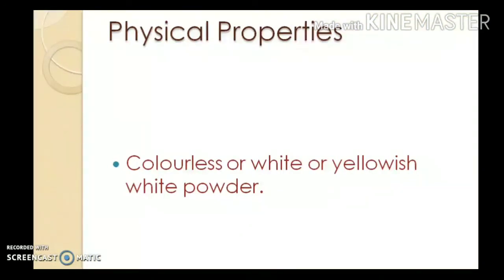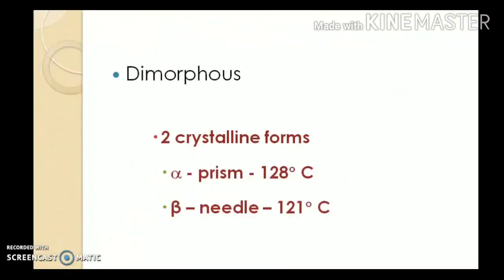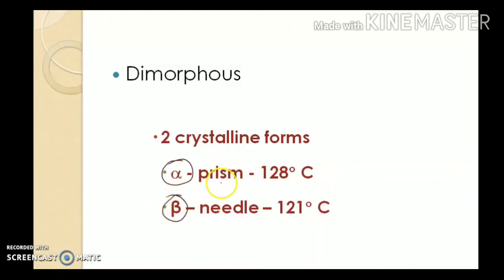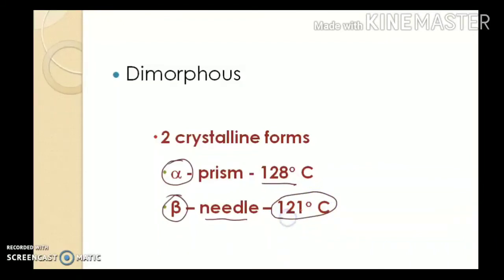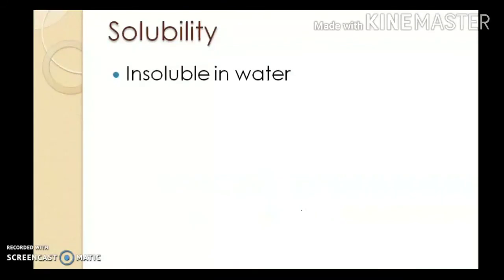The physical properties of progesterone: progesterone exists as a white or yellowish color powder or crystals. It is a dimorphous substance, meaning it exists in two crystalline forms. The alpha form is prismatic with a melting point of 128 degrees centigrade, and the beta form is needle-shaped with a melting point of 121 degrees centigrade.